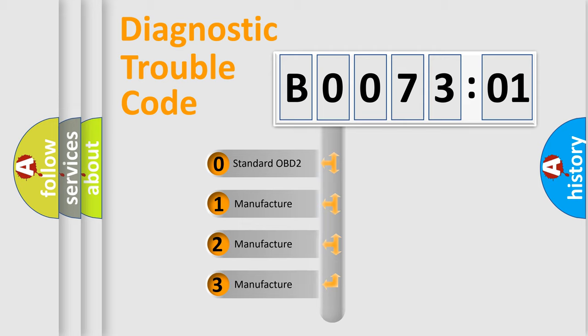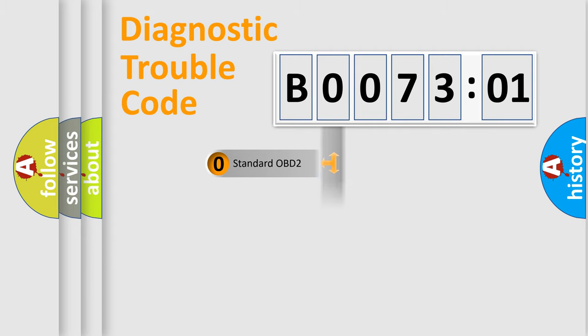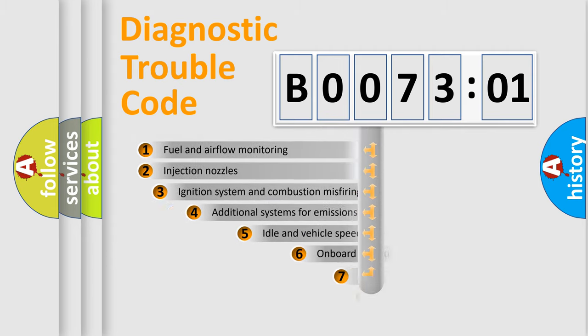If the second character is expressed as zero, it is a standardized error. In the case of numbers 1, 2, 3, it is a more prestigious expression of the car-specific error.